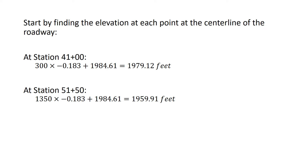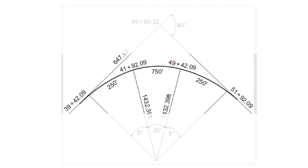These are the centerline elevations, so now we need to figure out the edge of pavement elevation. At station 41 we're on the first spiral transition, and at station 51 plus 50 we're on the second spiral transition. One key distance is how far station 41 is from our TS point — that's 157.91 feet, found by subtracting the TS station from station 41.